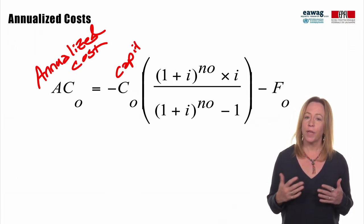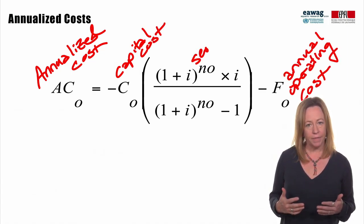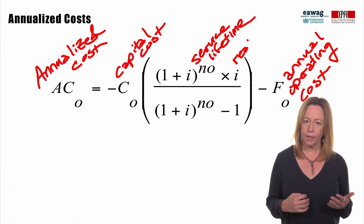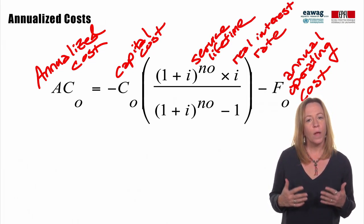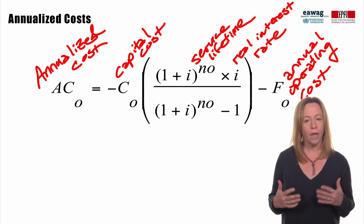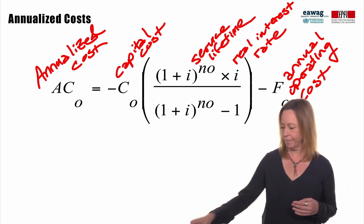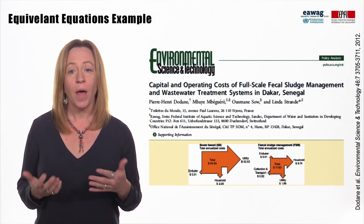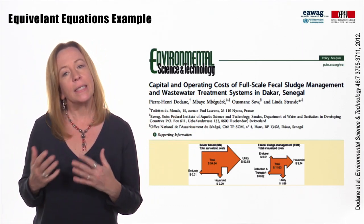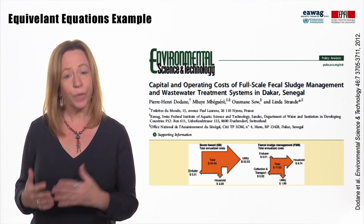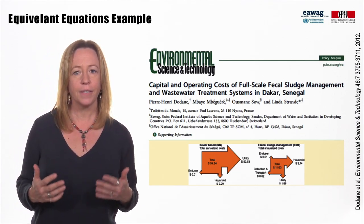If we know the capital cost, operating cost, service lifetime, and real interest rate, we can use this equation to compare the relative equivalent costs of two different technologies. As an example, I will walk you through the case study presented in this paper, comparing existing side-by-side sewer and fecal sludge management systems in Dakar, Senegal.